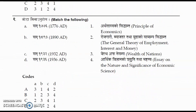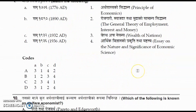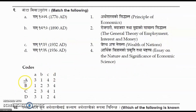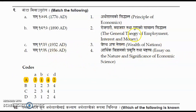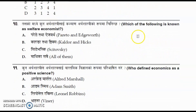Question number nine: match the dates to the books. The correct option is option A: 1776 — 'Wealth of Nations,' 1890 — 'Principles of Economics,' 1932 — 'Essay on the Nature and Significance of Economic Science,' and 1936 — 'The General Theory of Employment, Interest and Money.'